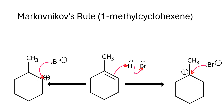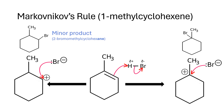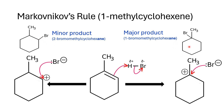Thinking about the two different products we're going to make, there are two different places the bromine could end up being attached. The minor product is 2-bromomethylcyclohexane, and the major product is 1-bromomethylcyclohexane. These are now halogenated or brominated cyclohexanes, not cyclohexene anymore.